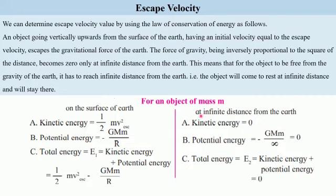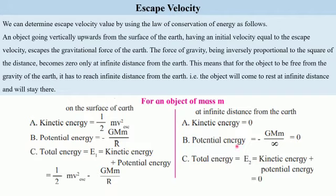At infinite distance from the Earth, kinetic energy is zero because the object has come to rest. Similarly, potential energy for an object at infinite distance is also zero because the value of gravitational force becomes zero. Hence total energy E2, which equals kinetic plus potential, is zero.